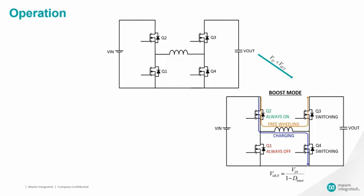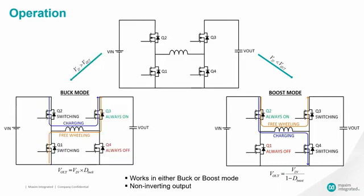When the input voltage is near to the output voltage, all 4 switches will be switching. In short, the 4-switch buck-boost converter can operate either as a buck converter or as a boost converter depending upon the input voltage.